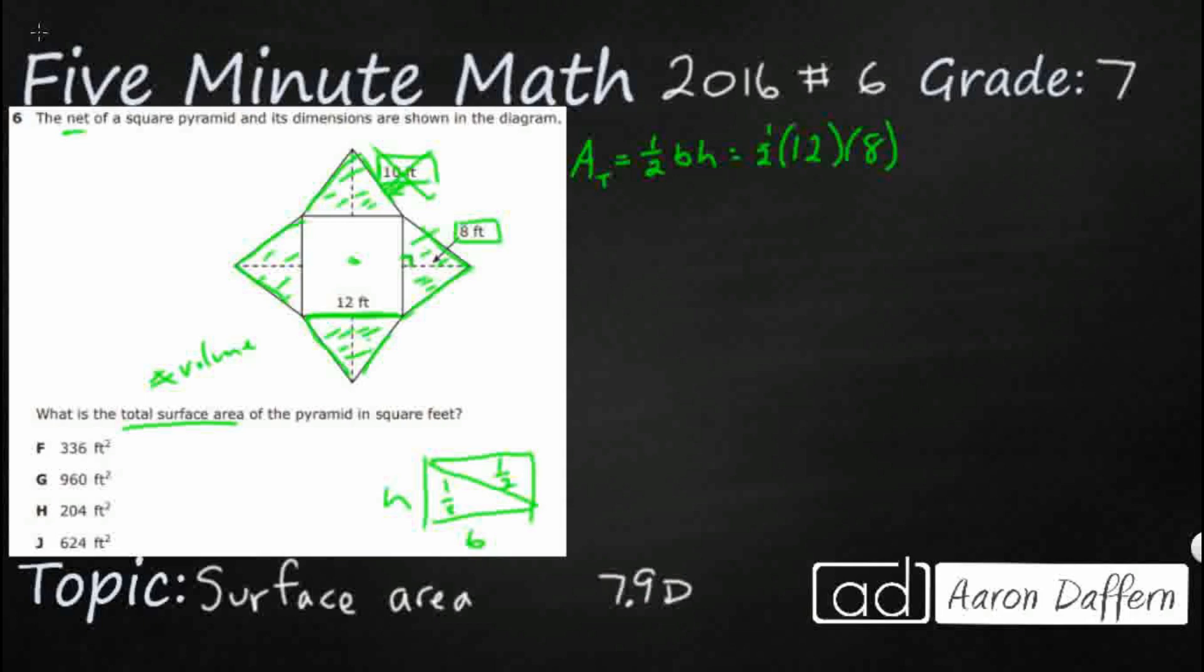I can multiply this one-half times 12 if I want to—that's going to be 6. Half of 12 is 6, times 8, that's 48. If I wanted to, I could have multiplied the half times 8—half times 8 would be 4—times 12 still equals 48. So the area of one of these is 48, but I've got four of them.